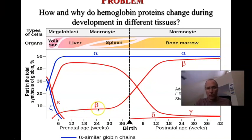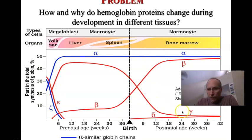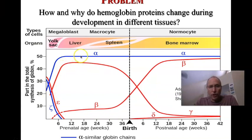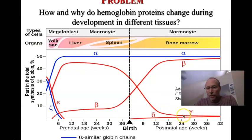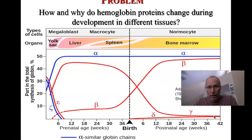In the fetal stage, beta is low and is replaced by gamma globin — what we call fetal hemoglobin — because fetal hemoglobin is made up of two alpha chains and two gamma chains. The fetal hemoglobin begins to decrease at about the 30th week, and by about 18 to 24 weeks after birth, it's down to a very low percentage of all the hemoglobin in your body.